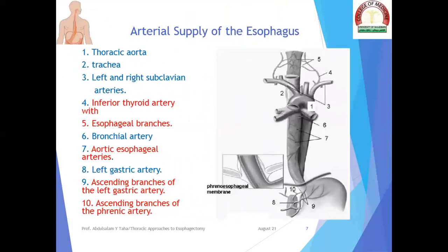The arterial supply of the esophagus is as follows: the inferior thyroid artery, arising from the left subclavian artery, gives esophageal branches to the cervical esophagus. Aortic esophageal arteries arise from the descending thoracic aorta to supply the thoracic esophagus. The ascending branches of the left gastric artery and the ascending branches of the phrenic artery supply the abdominal esophagus.